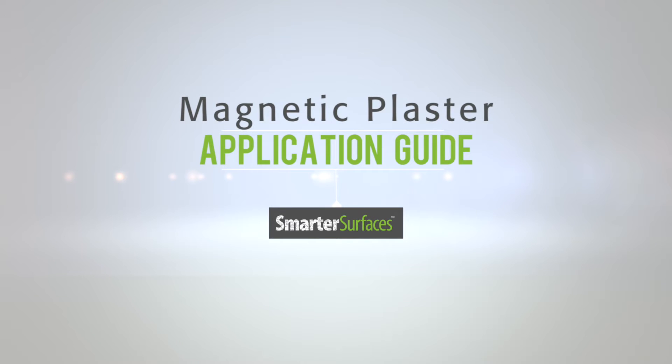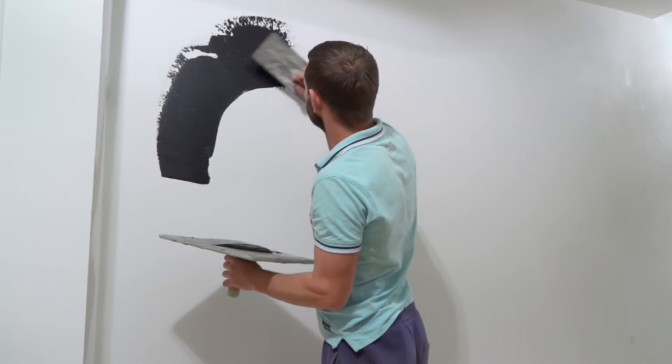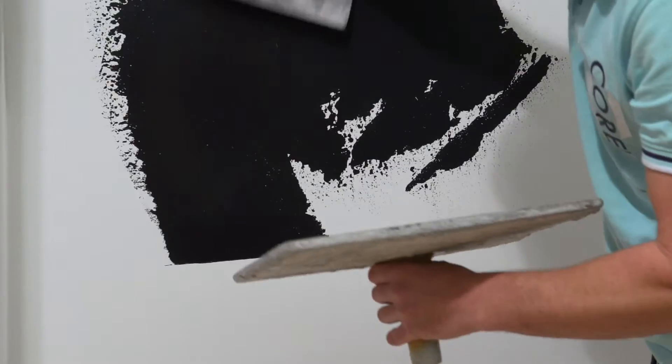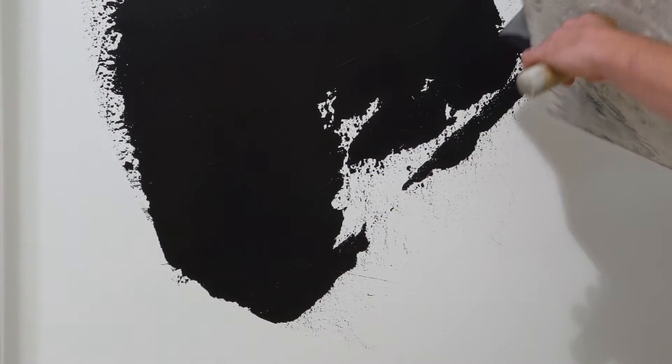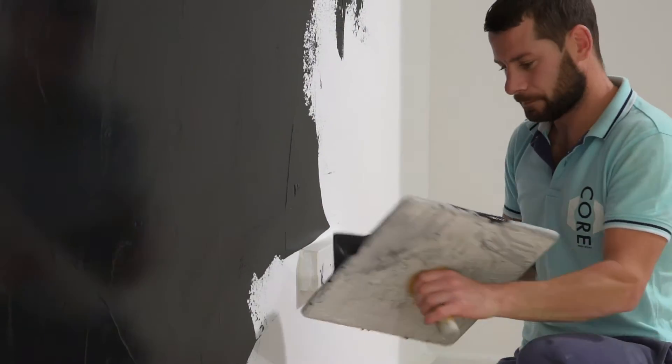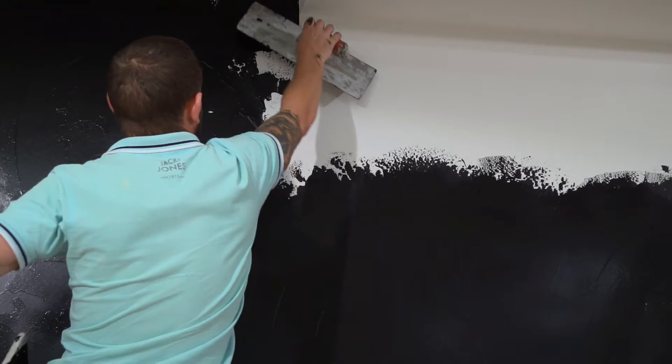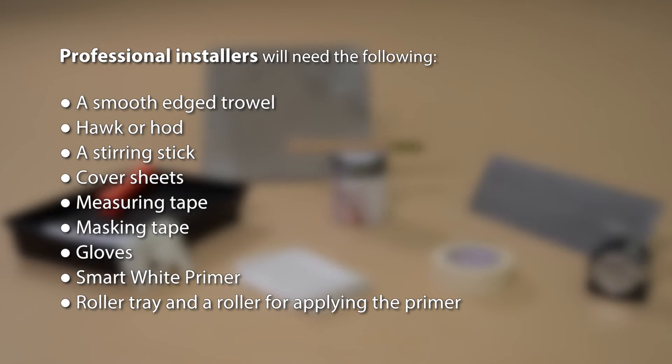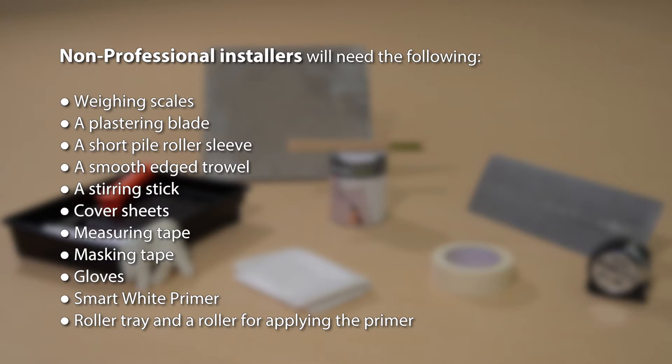Welcome to the Smarter Surfaces magnetic plaster application guide. To apply the plaster correctly, some specific tools are required. These will differ depending on whether or not the application process is being carried out by a professional installer or a non-professional installer. Professional installers will need the following. Non-professional installers will need the following.